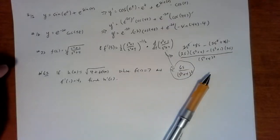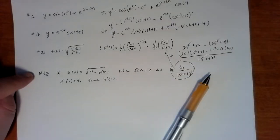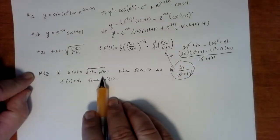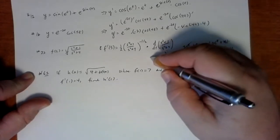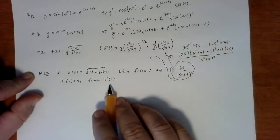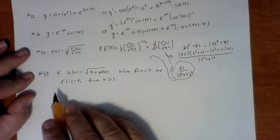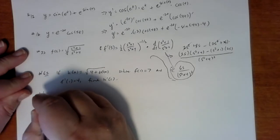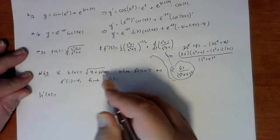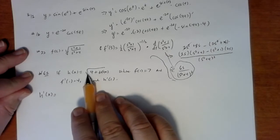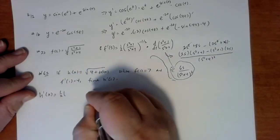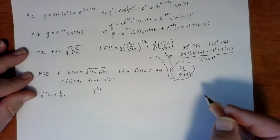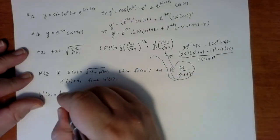Problem 62 in section 3.4: if h of x is the square root of 4 plus 3 times f of x, where f of 1 is 7 and f prime of 1 is 4, find h prime of 1. To do that we take h prime of x first. Notice this is a composition — the outside function is the square root, so its derivative brings down one-half with the inside function remaining.